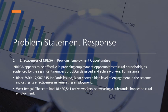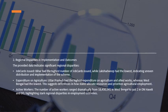Addressing the problem statement on effectiveness: NREGA appears effective in providing employment opportunities in rural households, as evidenced by a significant number of job cards issued and active workforce engagement, indicating a higher level of participation. West Bengal shows high active worker numbers, showcasing a sustainable impact on rural employment.